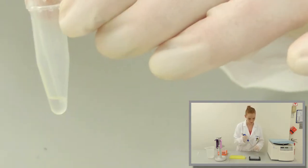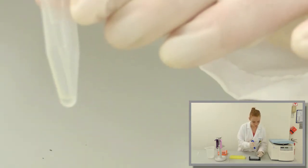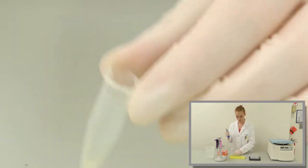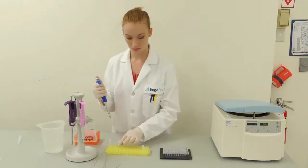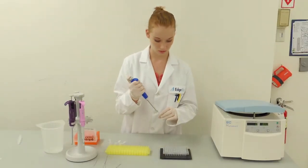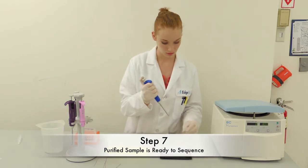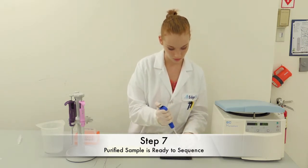The final step after basket removal would be to transfer the eluates from the micro centrifuge tubes over to a capillary plate of your choice. Once all of your samples are transferred, the plate can now be sent off for sequencing.